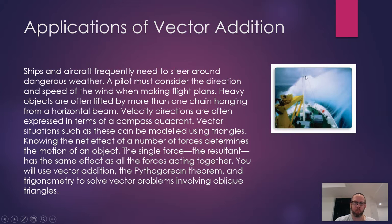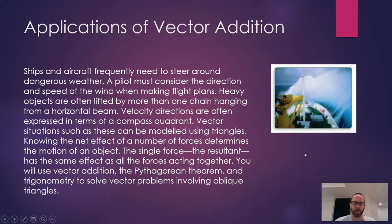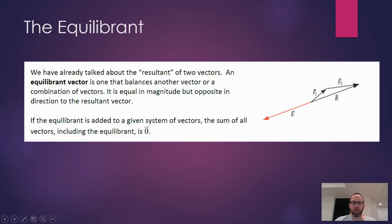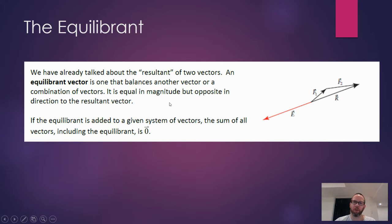All the problems we're doing today will be modeled with triangles — sometimes oblique triangles which have an obtuse angle. We'll be using all our trigonometry skills: right angle triangle trigonometry, sine law, and cosine law. We've talked about the resultant; one term that might come into play is the equilibrant. The equilibrant vector is one that balances another vector or a combination of vectors.